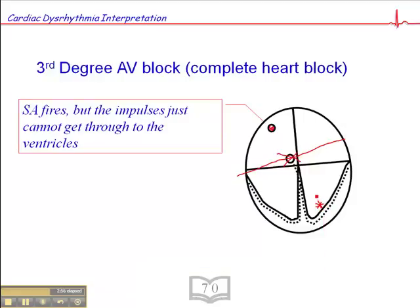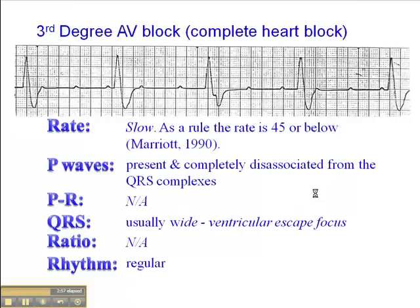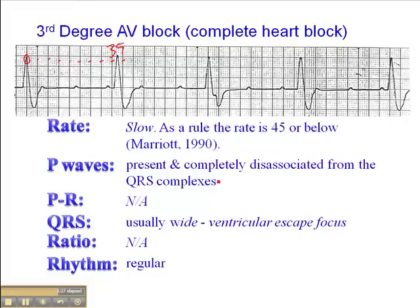If you look at the heart rate, it's quite slow, because a focus in the ventricle has an inherently slower firing rate. The Purkinje fibers have an inherent firing rate of between 20 and 40 beats per minute. Looking at the heart rate here — one QRS falls on a dark line, giving us 300, 150, 100, 75, 60, 50, 43, 37, 33 — so a heart rate of around 35 beats per minute in this case. A very slow heart rate.